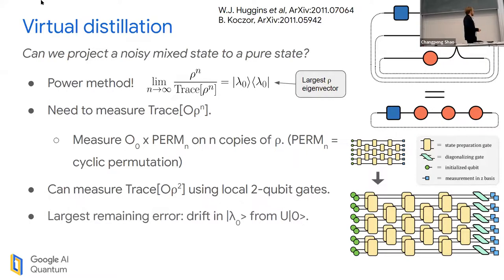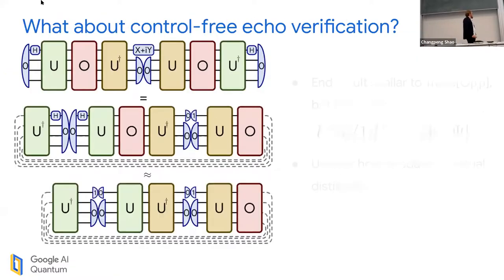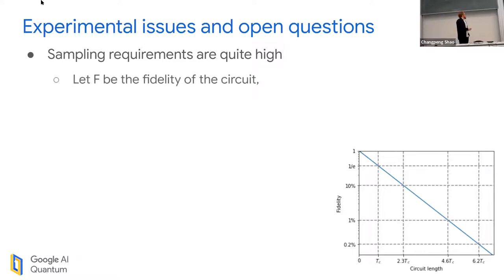There is one way we can do this, which is by the power method. If I take a noisy density matrix row and put it to the power M, then divide by its trace, it will limit to a rank one density matrix corresponding to the largest eigenvector of row. I need to measure traces with an observable. It turns out this trace equals the trace of O times the cyclic permutation on M copies of row.